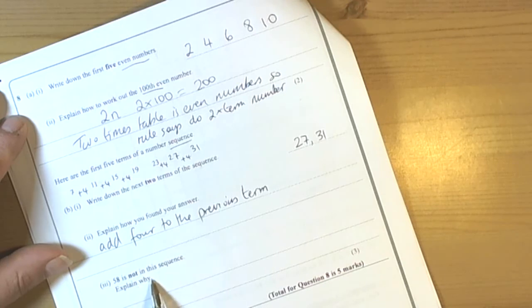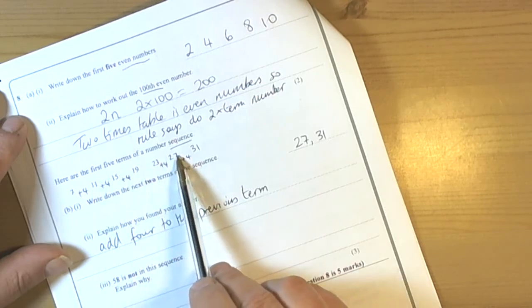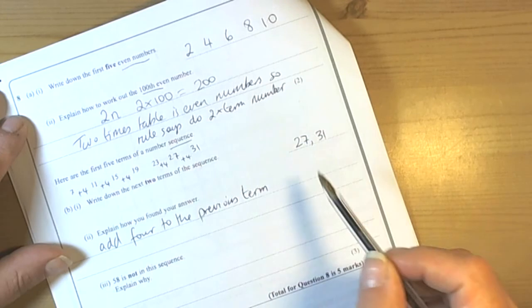58 is not in this sequence. Explain why. Well, we can see from here that we seem to be going 7, 1 on the end, 5, 9, 3, 7, 1. We can see that that pattern is going to continue.